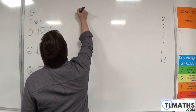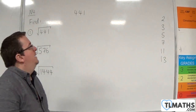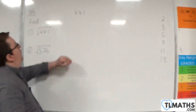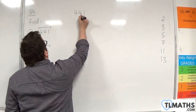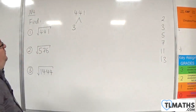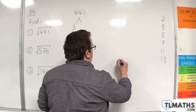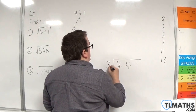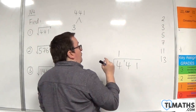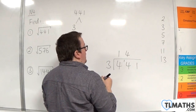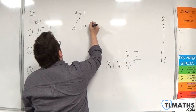So, 441. Now that's a tricky one to start with because it's not divisible by 2. Is it divisible by 3? Well, 4 plus 4 plus 1 is 9, which is divisible by 3. So 441 must be divisible by 3. If I divide 441 by 3: 3s into 4 go once with 1 remainder, 3s into 14 go 4 with 2 remainder, and 3s into 21 go 7. So we get 147.